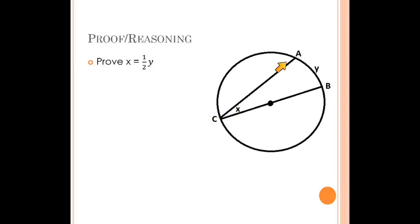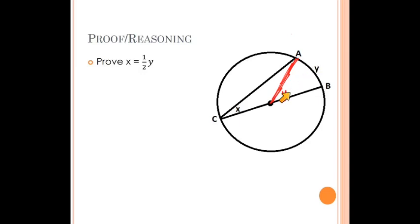We're starting with Theorem 10, the inscribed angle property — the idea that an inscribed angle is half the measure of its intercepted arc. To illustrate this, let's draw a particular inscribed angle where one of the rays is a diameter of the circle. Then I'm going to draw a central angle. We defined the measure of an arc to be the same as the central angle — that was a definition, we don't have to prove it.